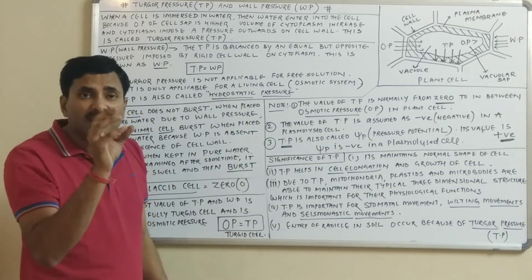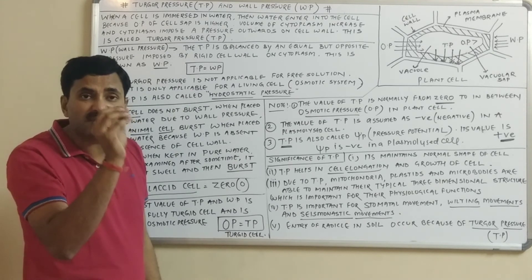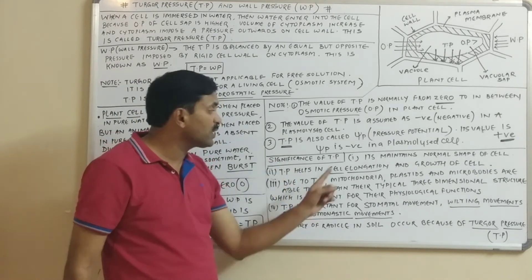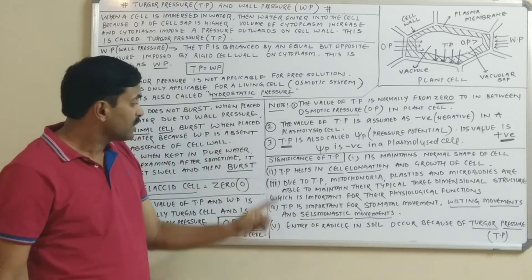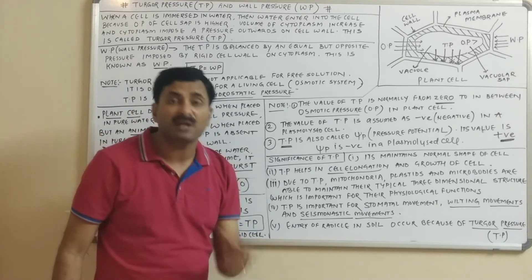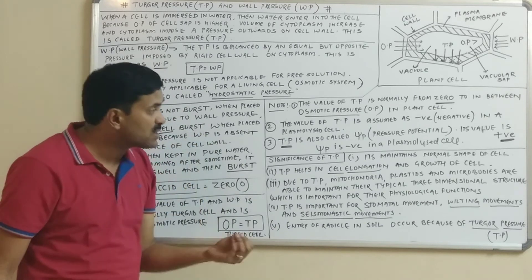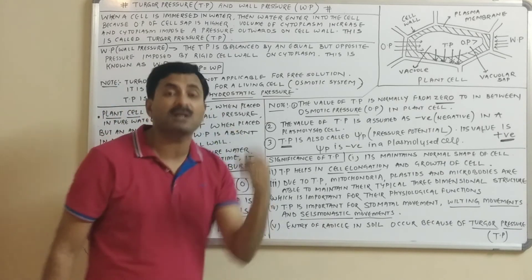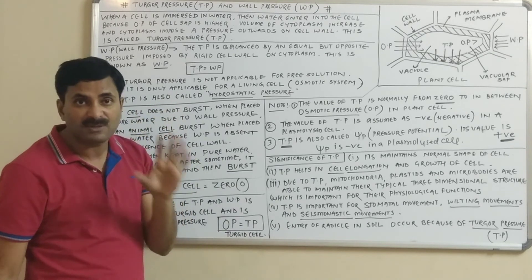Turgor pressure is also important for cell elongation and cell growth. Additionally, due to turgor pressure, cellular structures such as mitochondria, plastids, and microbodies are able to maintain their typical three-dimensional structure, which is important for certain physiological functions.